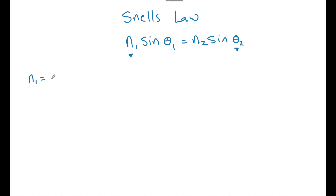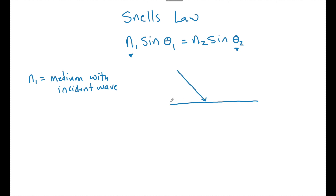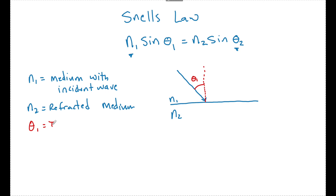n1 is always the incident medium — the incident wave is the one approaching the barrier, which is where the two mediums touch. n2 is the refracted medium. We remember from reflection that we measure all light angles from an imaginary line perpendicular to the boundary called the normal line. Theta1 is the incident angle. Some of this light wave is going to reflect, with the incident angle equaling the reflected angle.